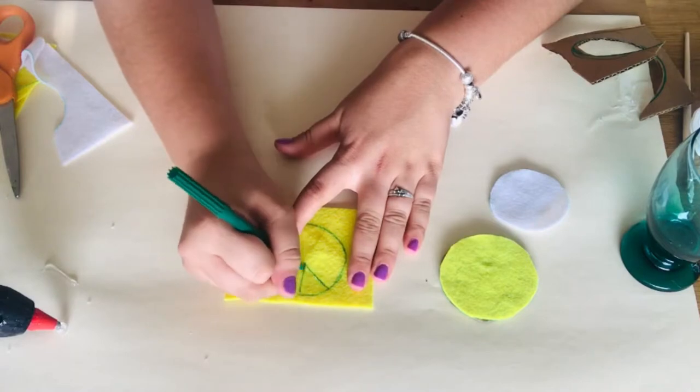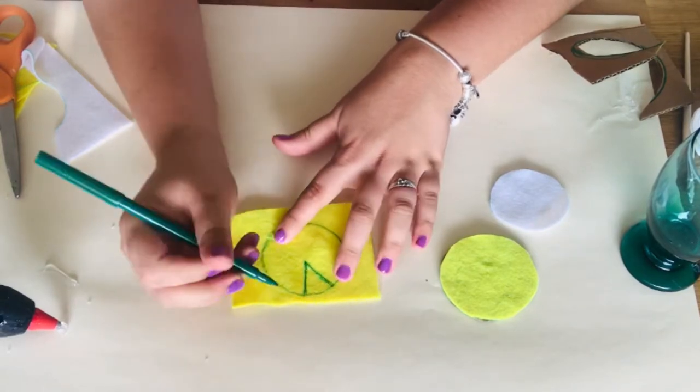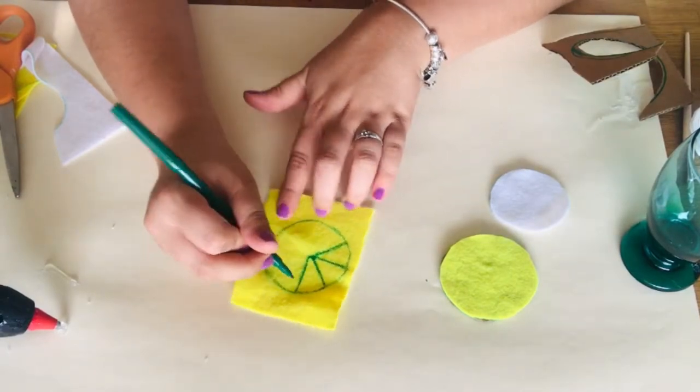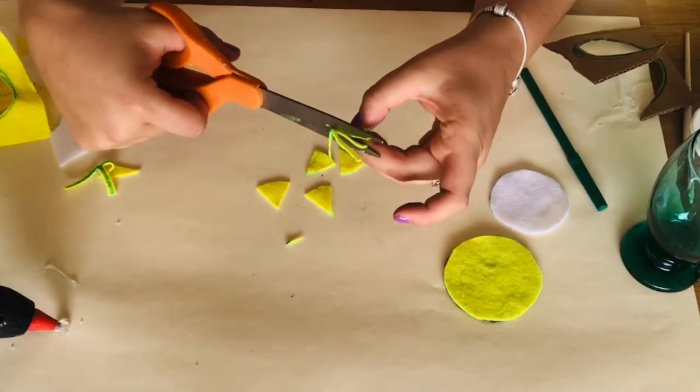Now with your marker, make lemon wedges. So all you're going to do is draw triangles inside of your yellow circle. And then cut out your triangles.